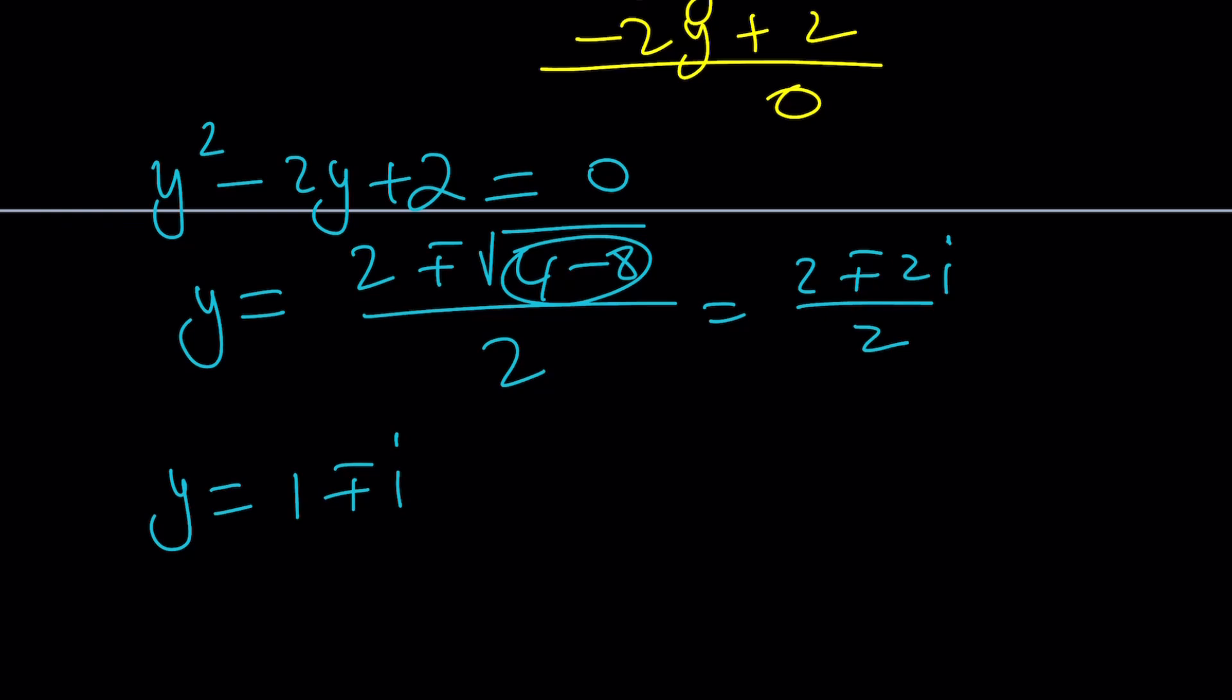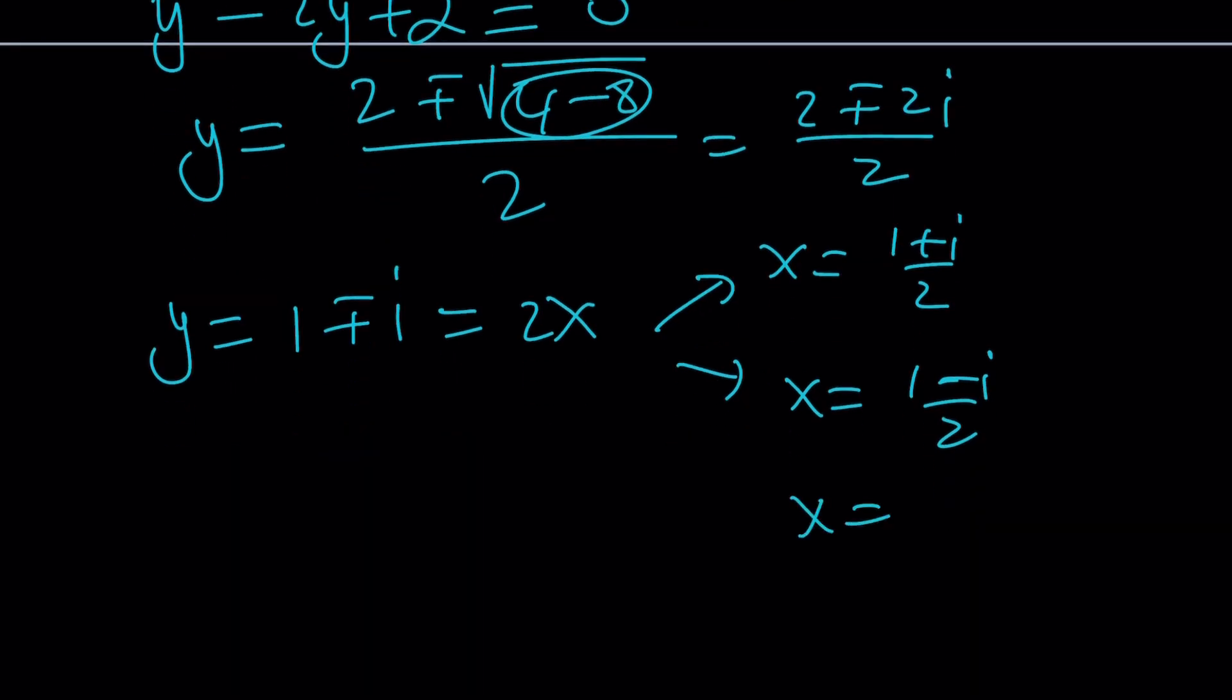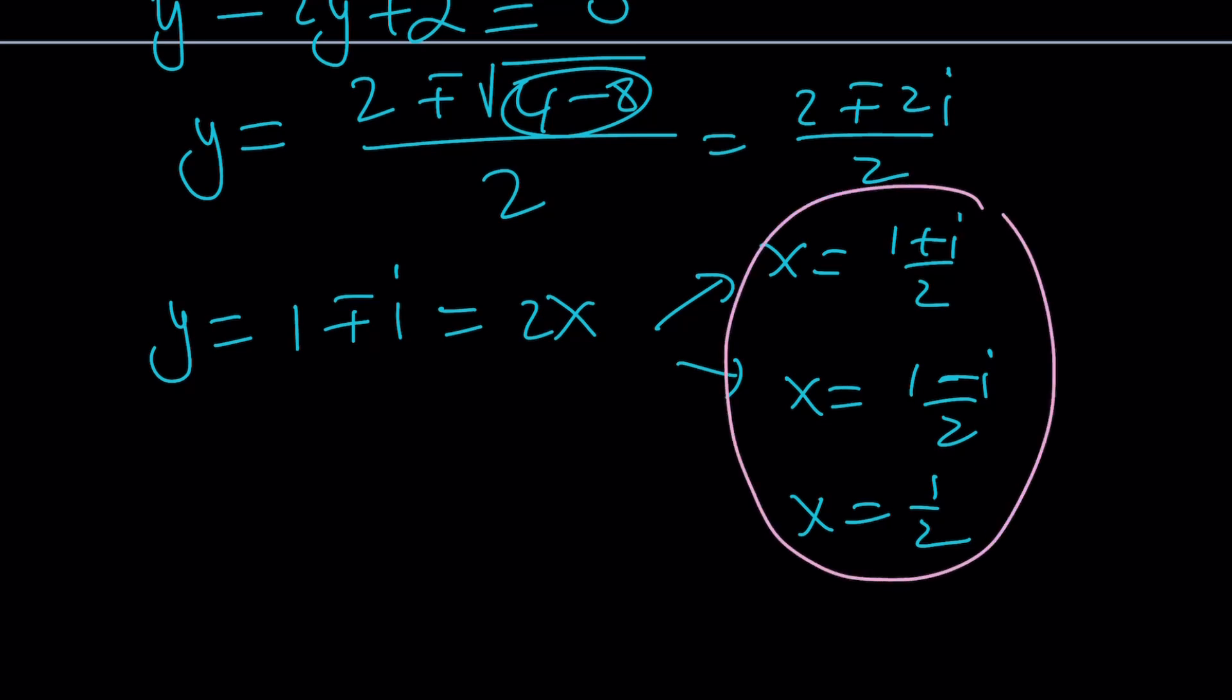From here, y is just going to be 1 ± i. But what is y? y = 2x. So if you set that equal to 2x, from here you can find x values: (1 ± i)/2. You can also write this as 1/2 ± 1/2 i. But those are going to be the solutions. And of course, along with x = 1/2, this completes the picture. Because remember, that was a cubic, and we're supposed to have three complex solutions, which includes real solutions. So that's the first method.